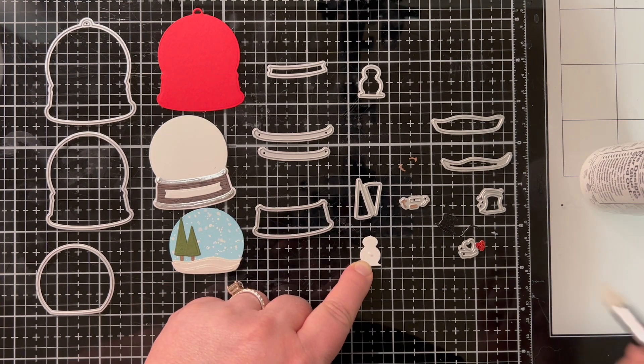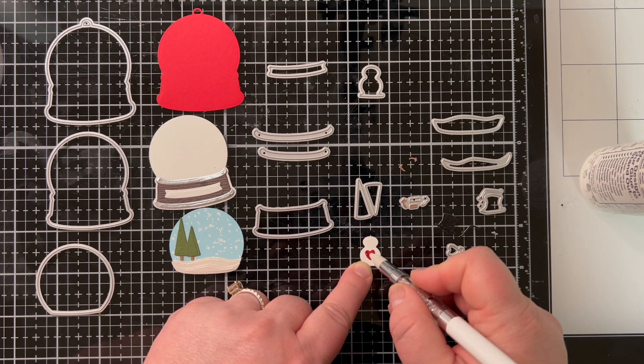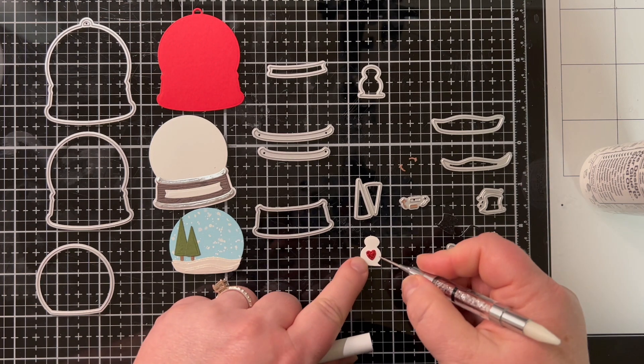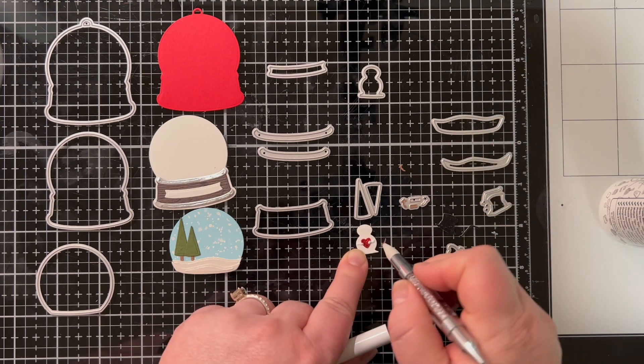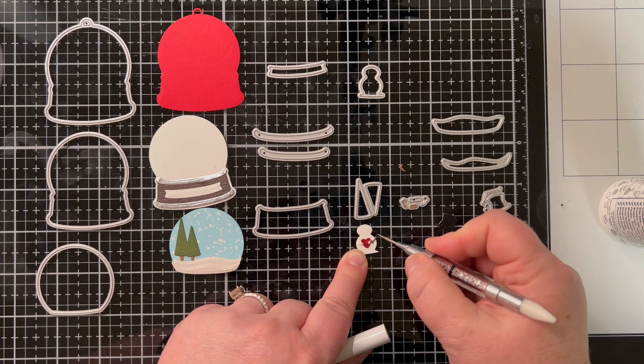And then there's the really cute little snowman, he's holding this heart and that is just so cute. There's tiny little arms for him so they glue on either side of his body with the hands overlapping that heart in the center.